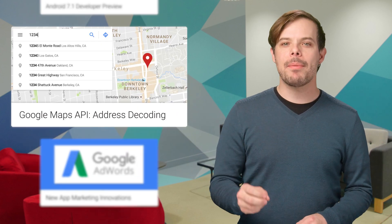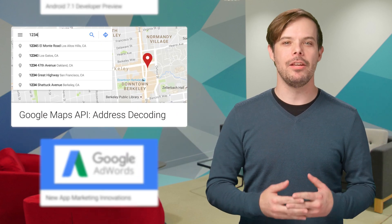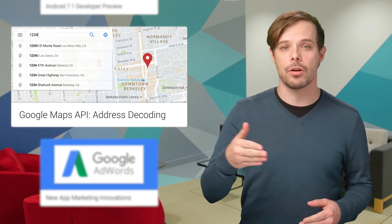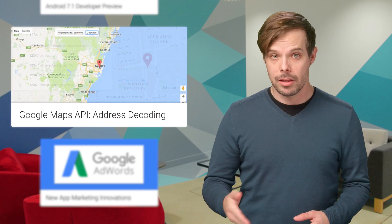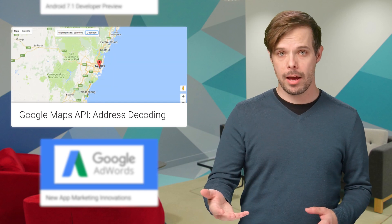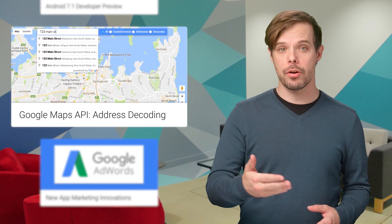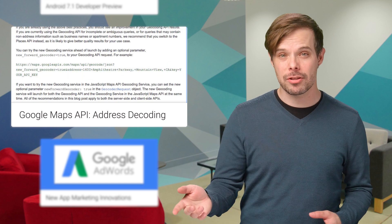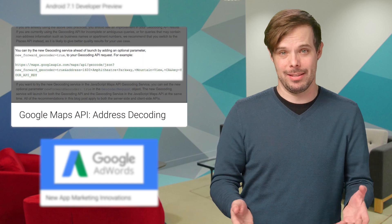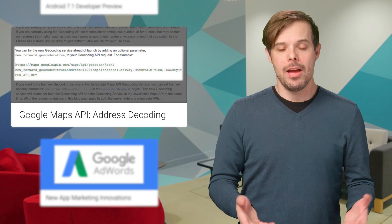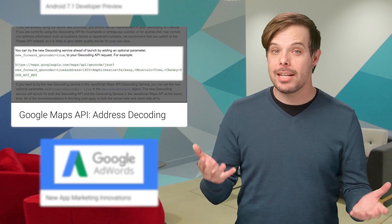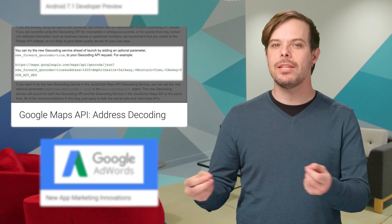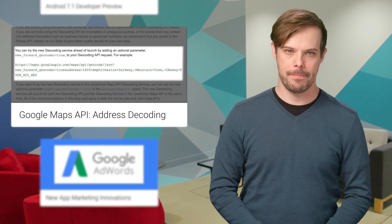The Google Maps APIs have several services that you can use to convert addresses into coordinates: the Geocoding API, the Place Autocomplete Service in Places API, and the Place Search Service in Places API. To better understand the differences between them and when you should use each one, take a look at the post.